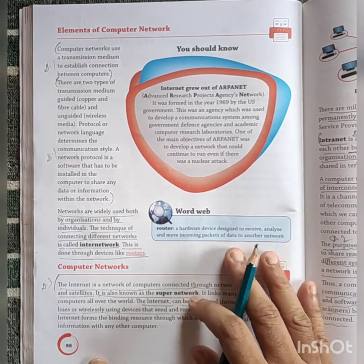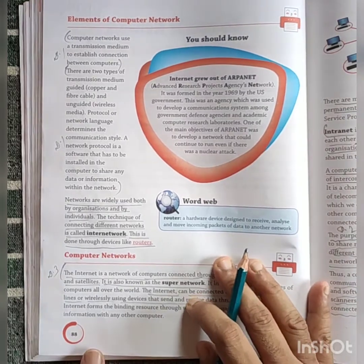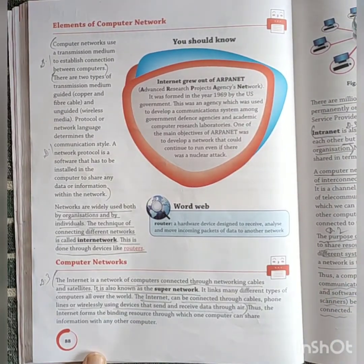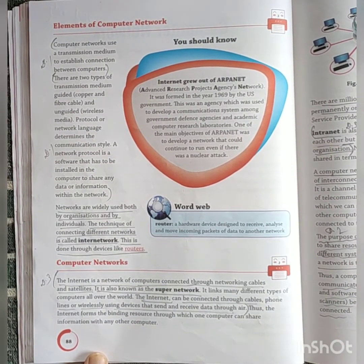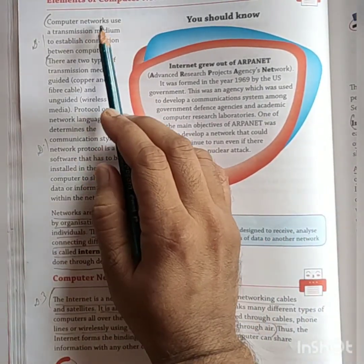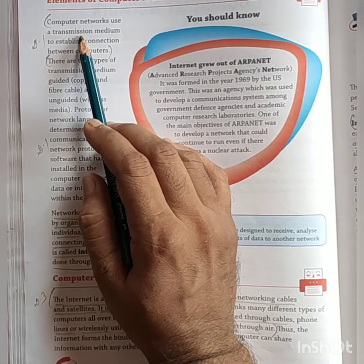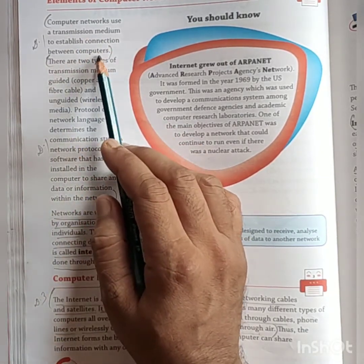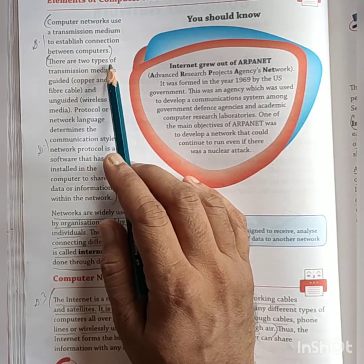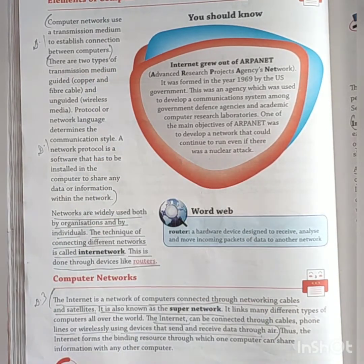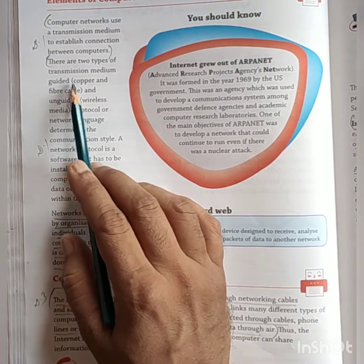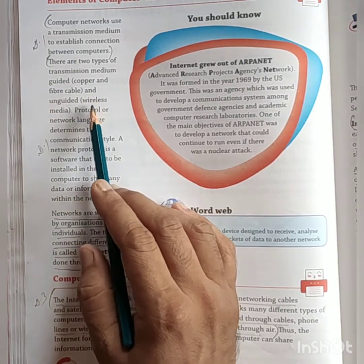First we need to know the elements of computer network. Computer networks use a transmission medium to establish connection between computers. This transmission can be done in two ways: either by guided or unguided. Guided means copper and fiber cable; unguided means wireless media.